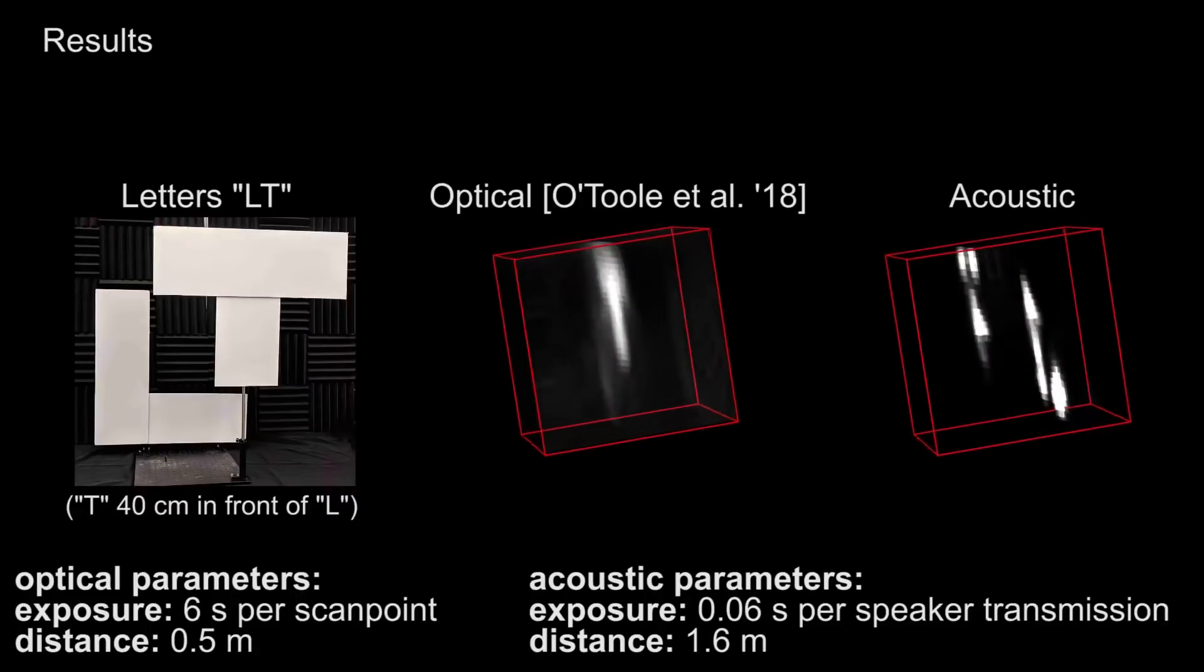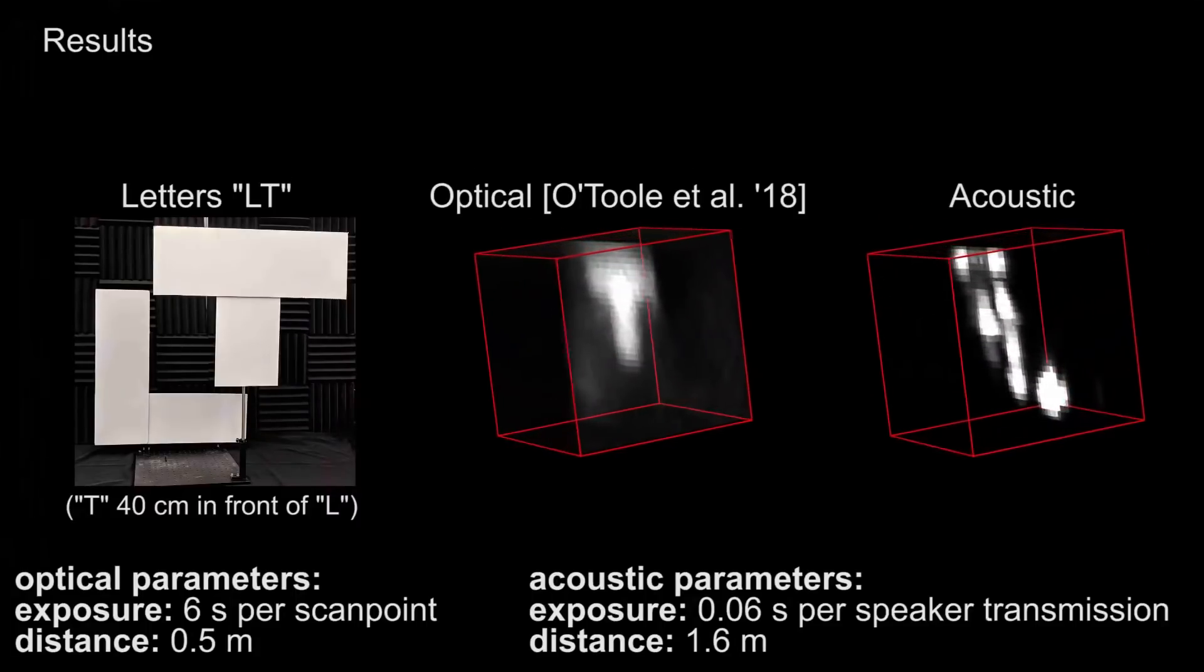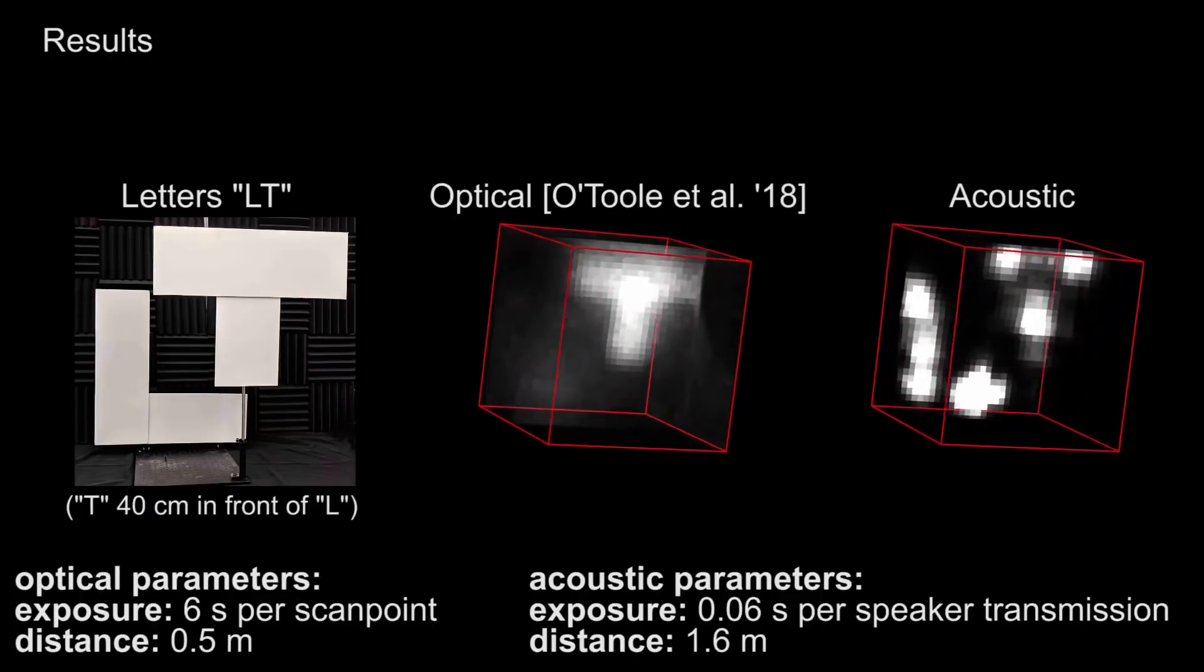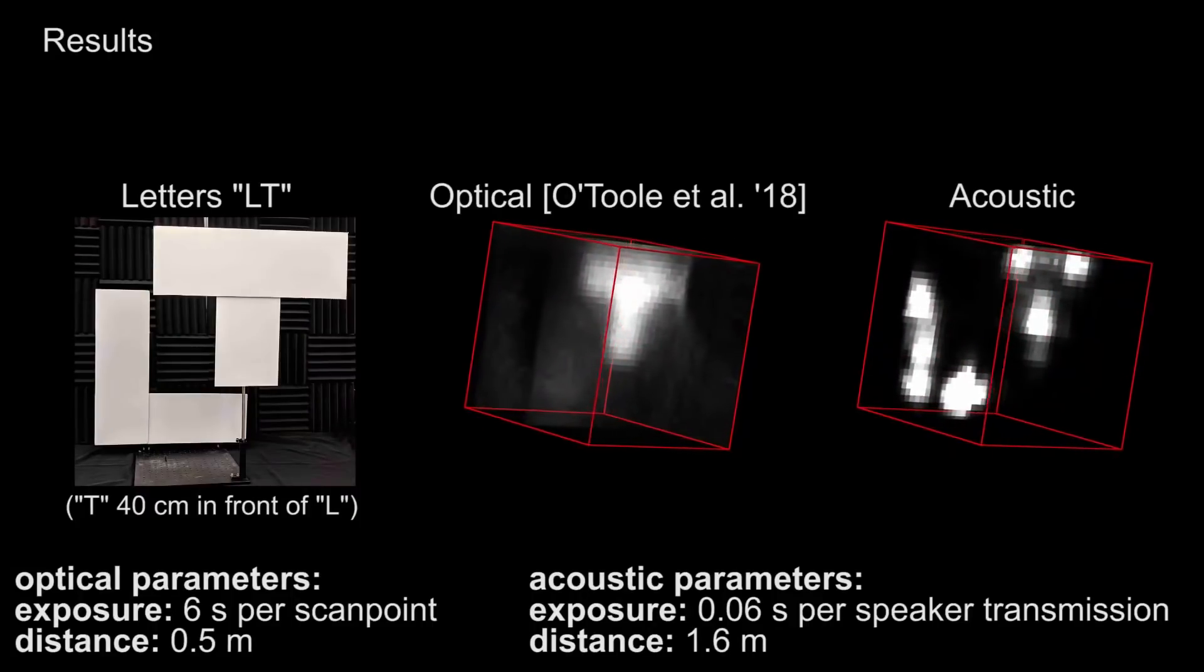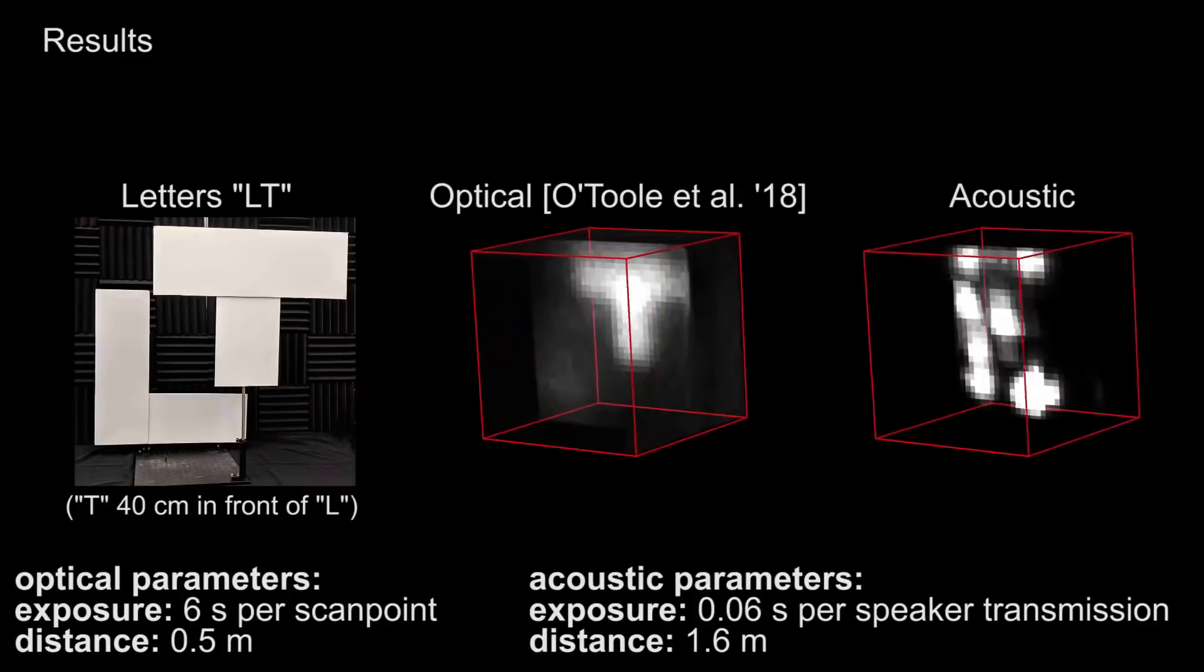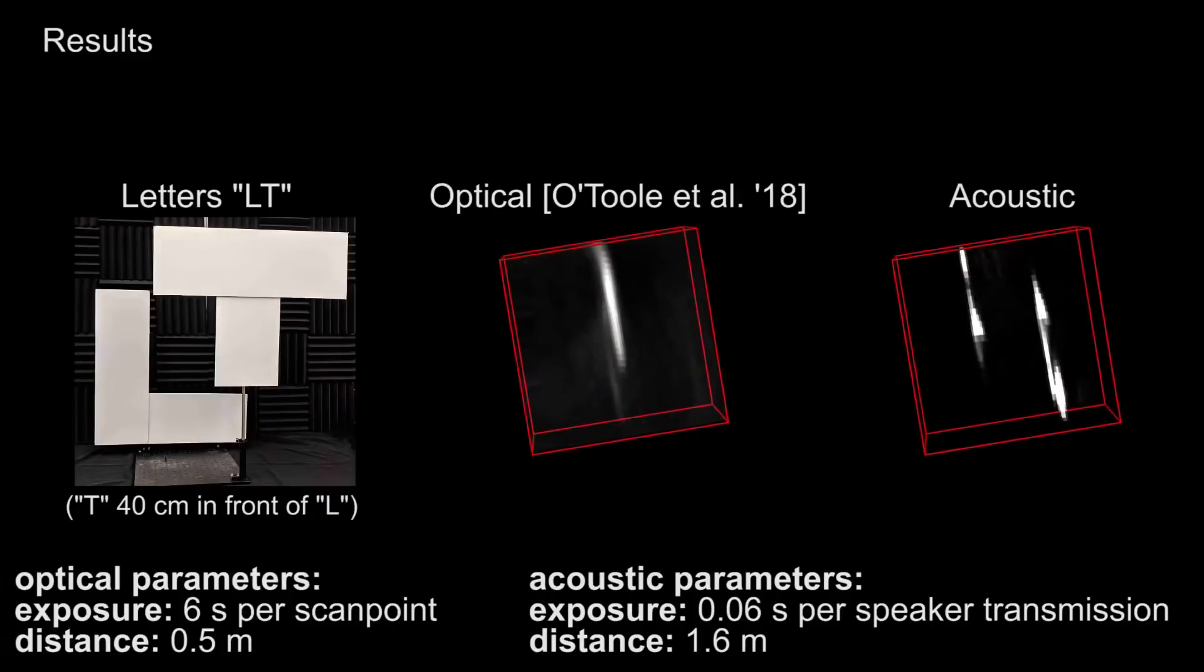In the acoustic case, the T can be made out at 1.6 meters from the wall, and the L can also be made out. Moreover, the effective per-sample exposure time for the acoustic signal is roughly 100 times less than the optical signal.